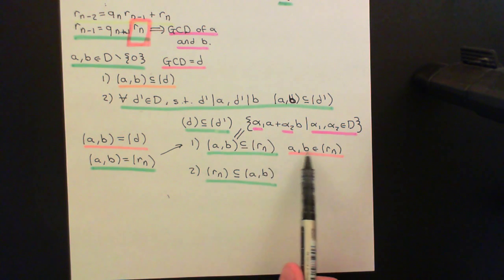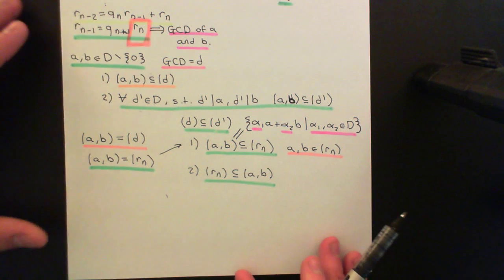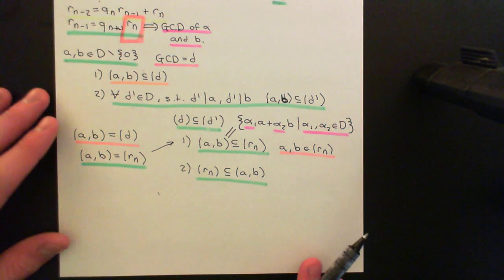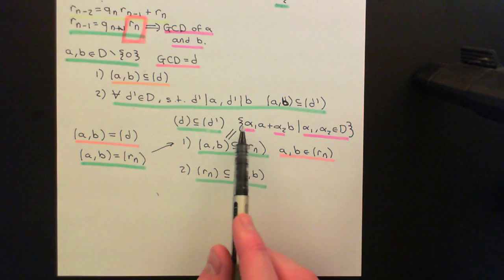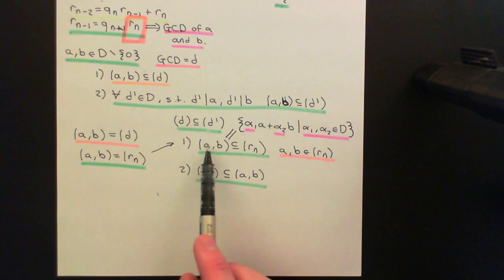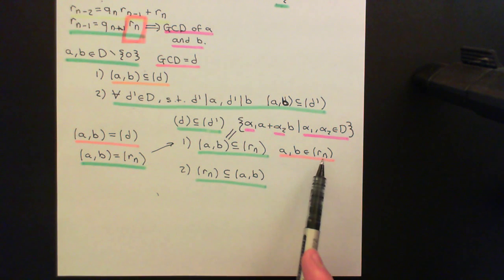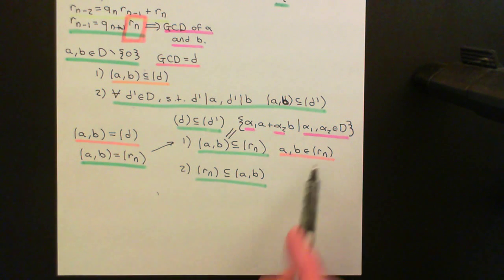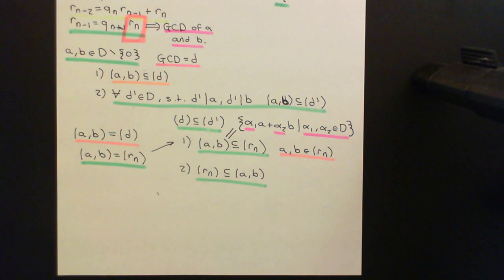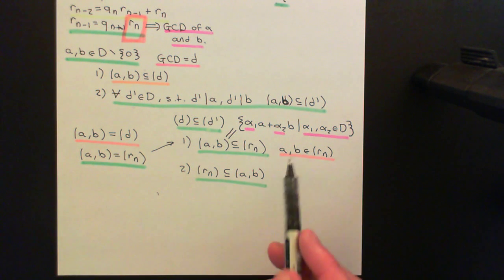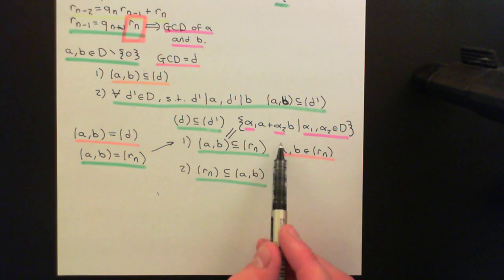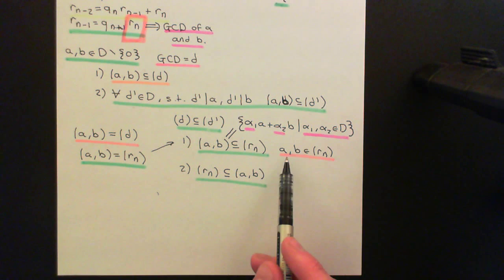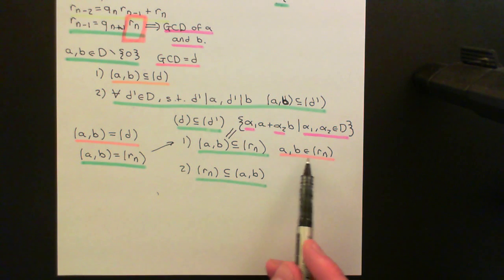As soon as you have A and B in an ideal, you have to have everything of this form in the ideal, because the ideal is closed under multiplication and closed under addition. So you simply cannot have A and B in an ideal without having everything in the ideal generated by A and B. So the instant you put A and B into the principal ideal generated by Rn, it implies the entire ideal generated by A and B is contained within it. We need to show that A and B are multiples of Rn.